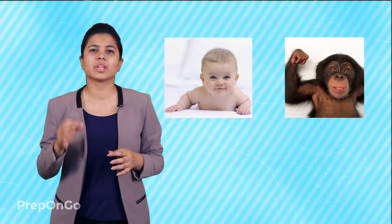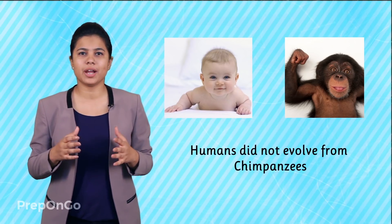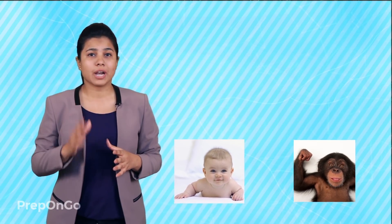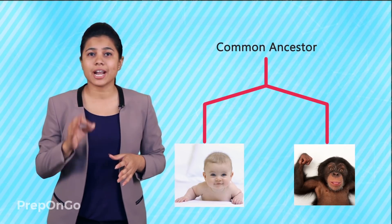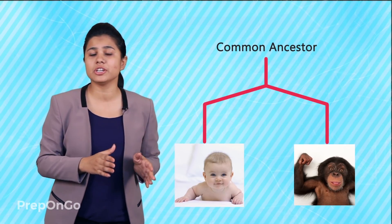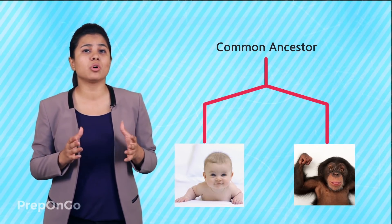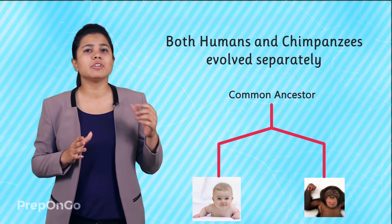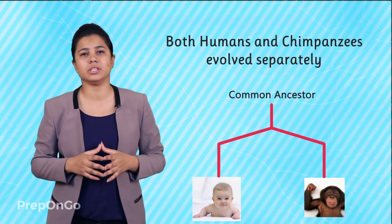Let's take the example of humans and chimpanzees. It is believed that humans have evolved from chimpanzees, but it is not true. Humans have not evolved from chimpanzees. Rather, they both have evolved from a common ancestor, and that common ancestor was neither a human nor a chimpanzee. So we can say that the chimpanzee is more of a cousin than an uncle for us. Both of them have evolved in their separate ways to become the modern-day chimpanzee and human beings.